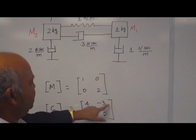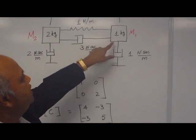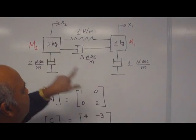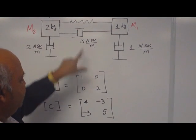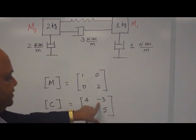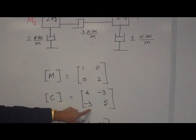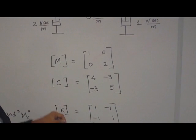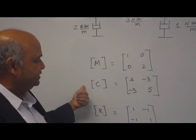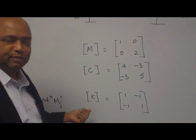So you can assemble diagonal elements. The off-diagonal elements are negative sum of damping between 1 and 2. Because C12 is between 1 and 2, M1 and M2. So only one damping element between these two masses, which is 3. So the negative of that, minus 3. And C21, same as C12, because they are symmetric. The damping matrix is symmetric.